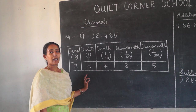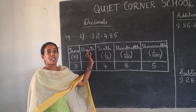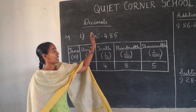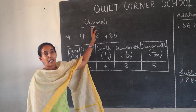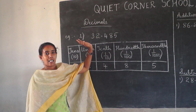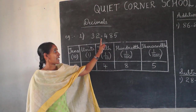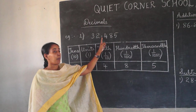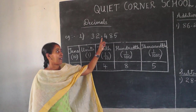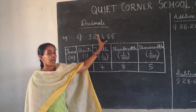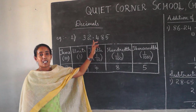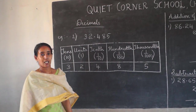Hello everybody. In maths you will come across the word decimals. What are decimals? Decimal numbers are numbers which contain a point. Somewhere in a number there will be a point. That is called the decimal point.